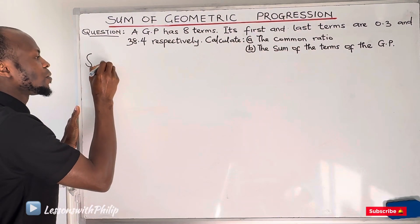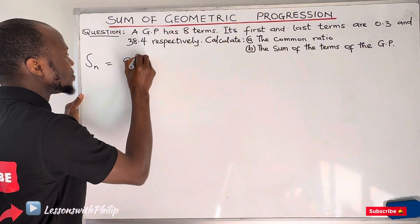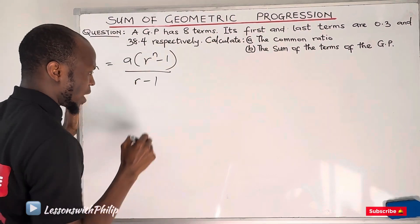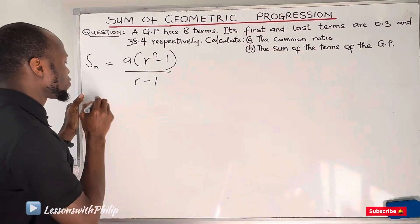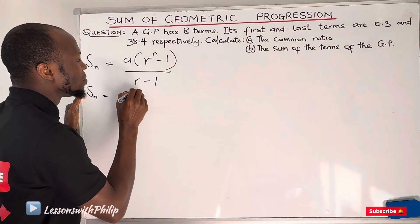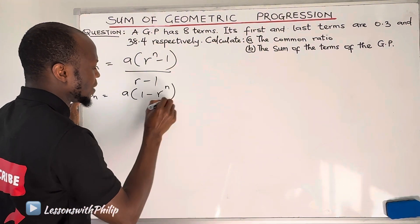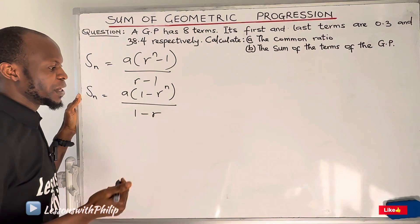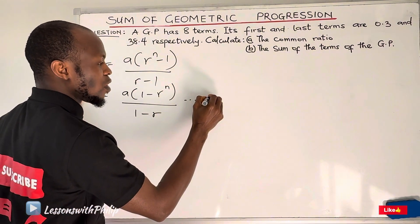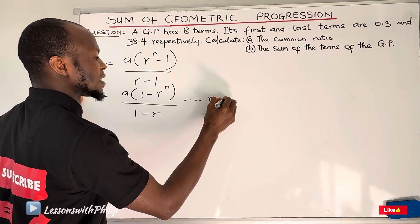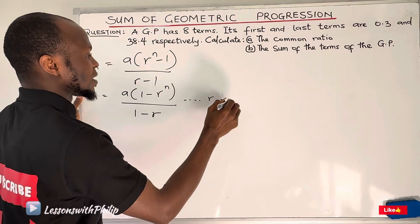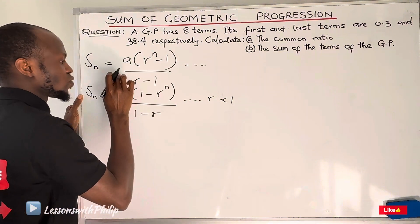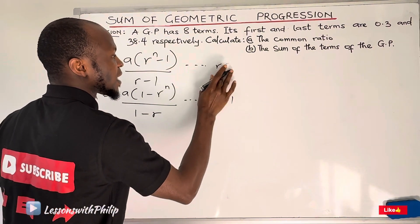The sum of a GP is given as: first term multiplied by r raised to power n minus 1, all divided by r minus 1. We can also change the formula to: first term multiplied by 1 minus r raised to power n, all divided by 1 minus r. It is more convenient to use this second formula when your common ratio is less than 1, and the first formula when your common ratio is greater than 1.